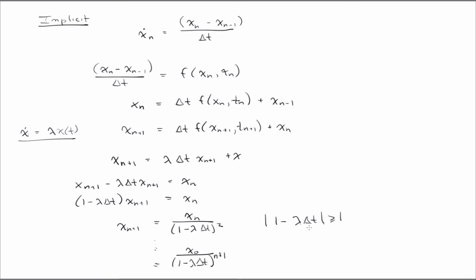But with an implicit calculation, each step is more expensive because we have to solve this implicit equation. In one dimension, it's no problem. But in higher dimensions, this means inverting a matrix, which is expensive.